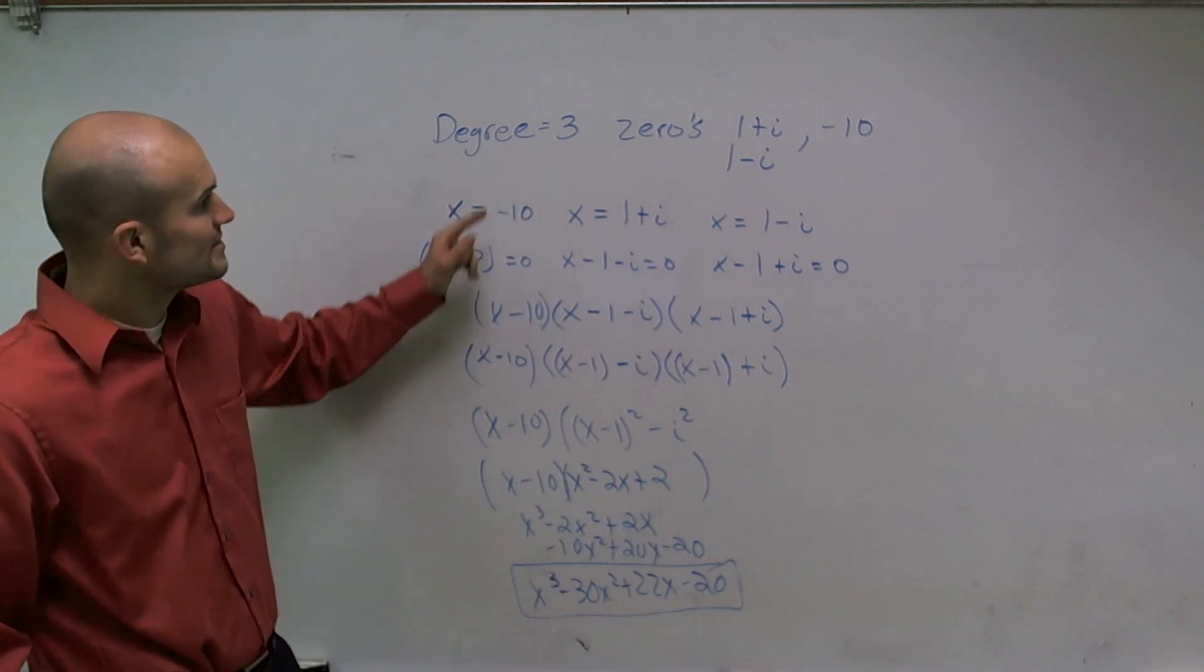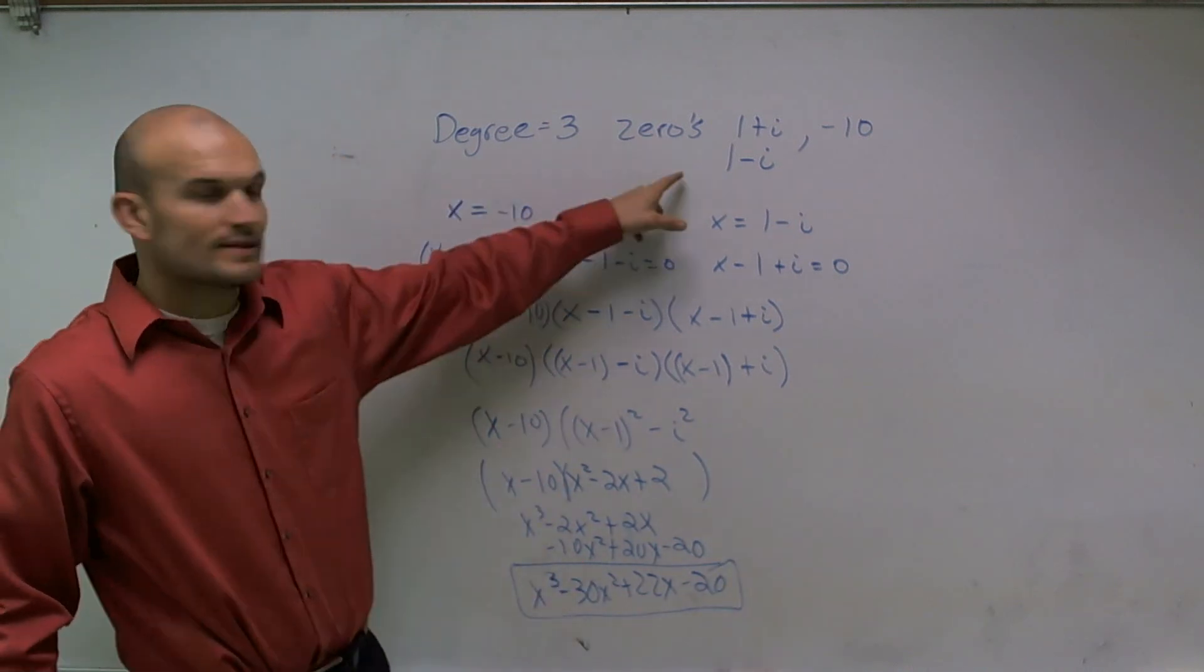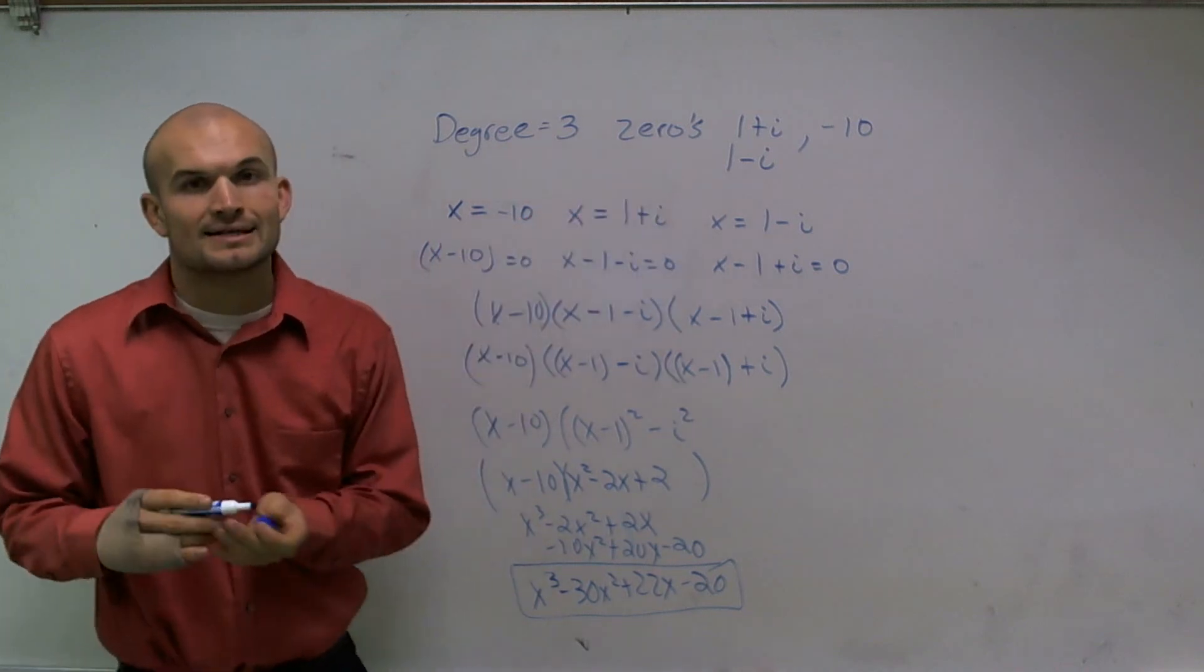And that is my polynomial to a third degree with the zeros of 1 plus i and negative 10.